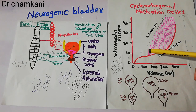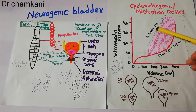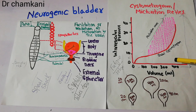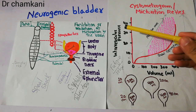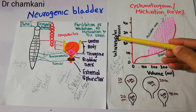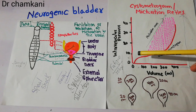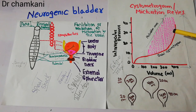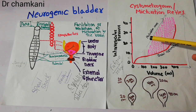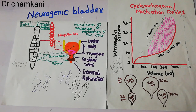The frequency and intensity of the micturition waves increases as the amount of urine in the bladder increases. Looking at the graph: here is the intravesicular pressure and here is the urine volume. As the volume increases, the basal tone increases, and on top of that, the frequency and intensity of the contractions also increases.